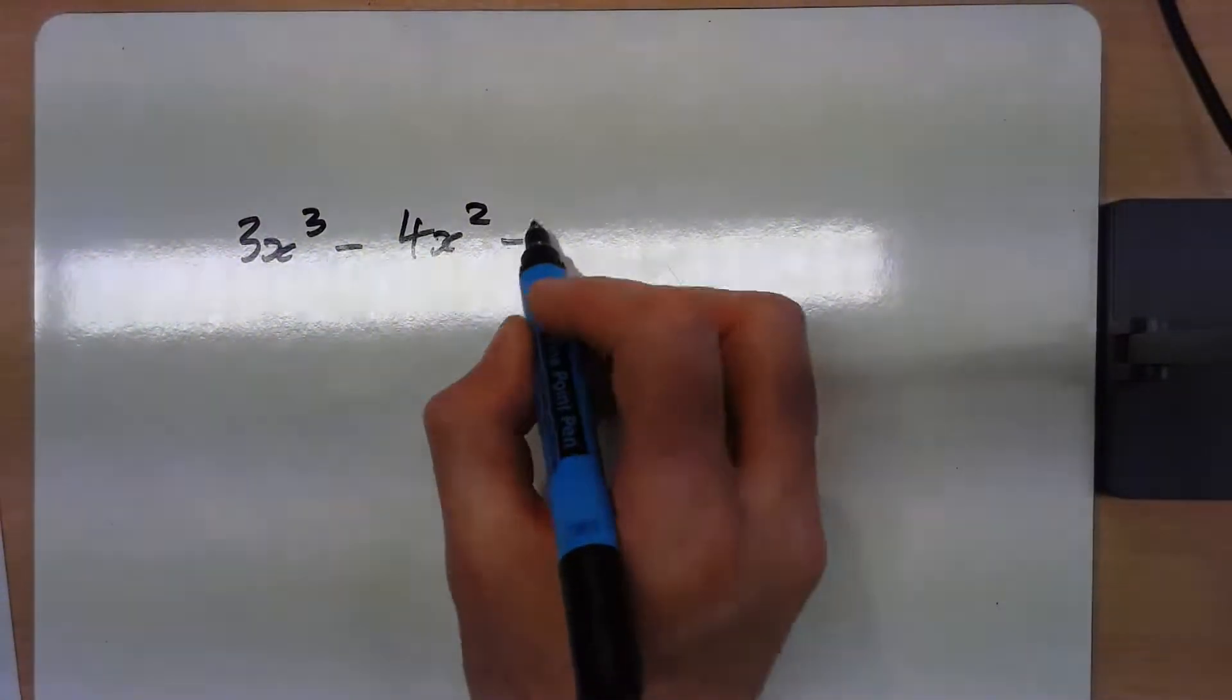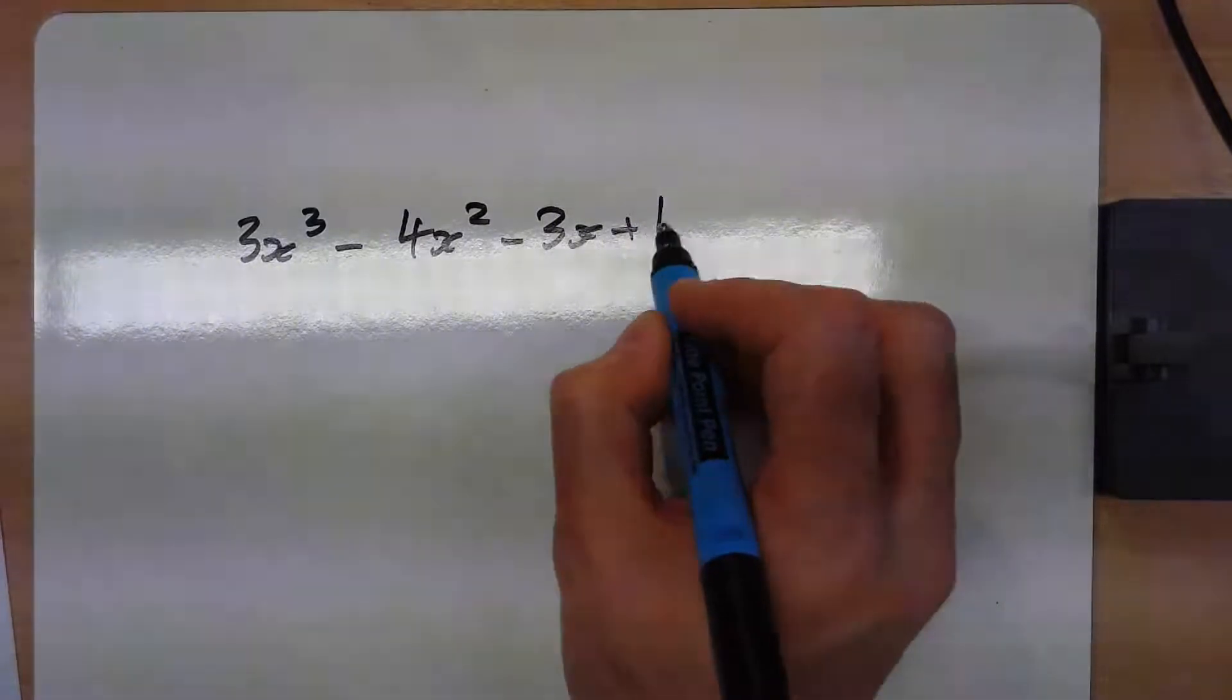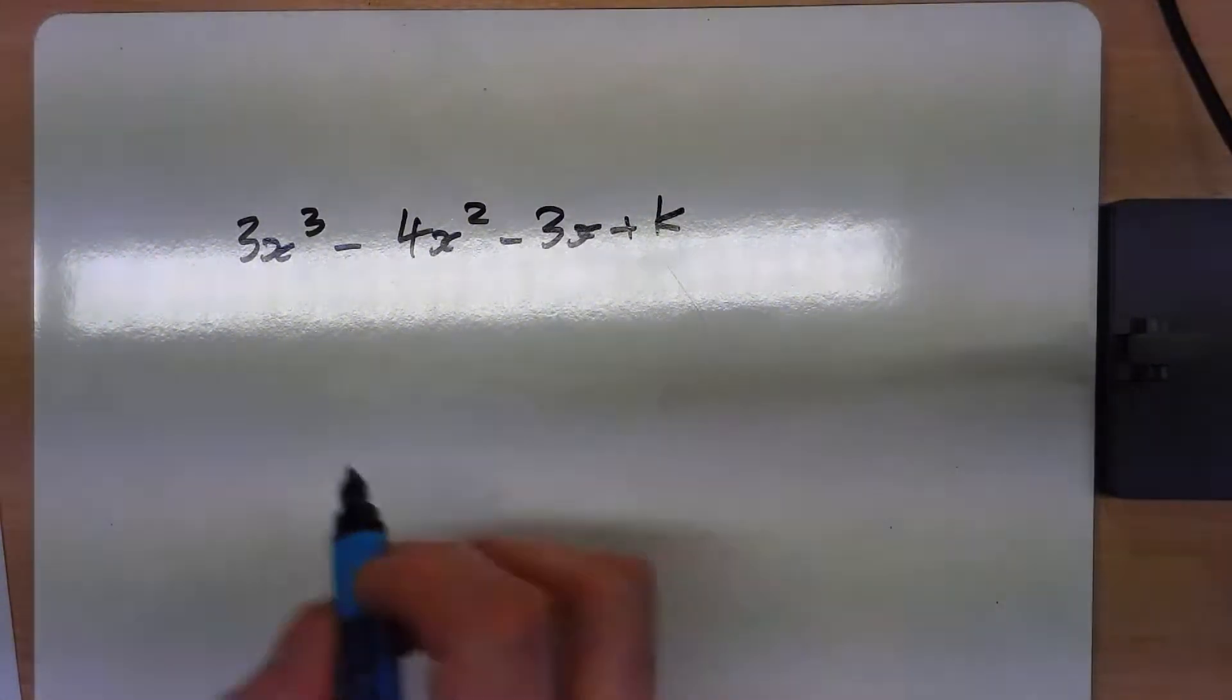3x cubed, 4x squared, 3x and k equals 0, and we're told that 2 is a root.